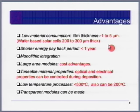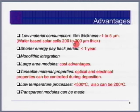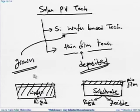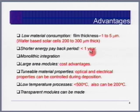Advantages of thin film: First, film thickness is only 1 to 5 microns, so less material is used, which means lower cost. Second, the deposition process occurs at low temperatures — 200 to 300°C — compared to 2000°C for making a silicon ingot and 800°C for diffusion in crystalline silicon. Therefore, less energy is required, and the energy payback period is shorter — less than one year.